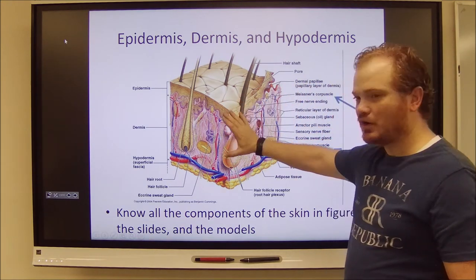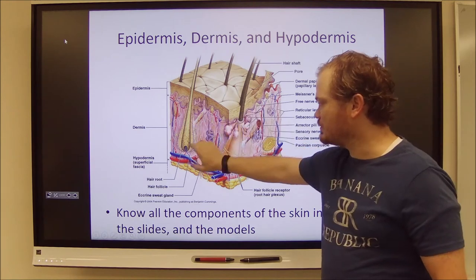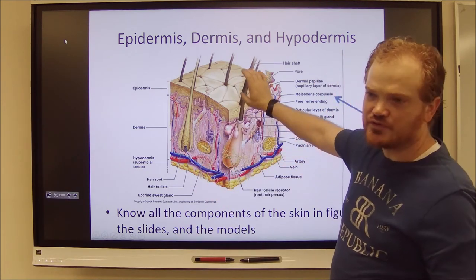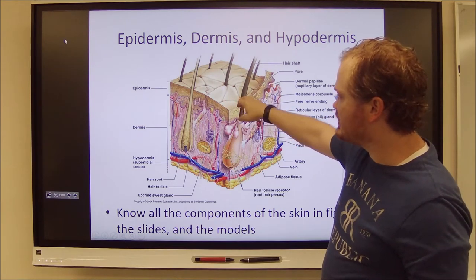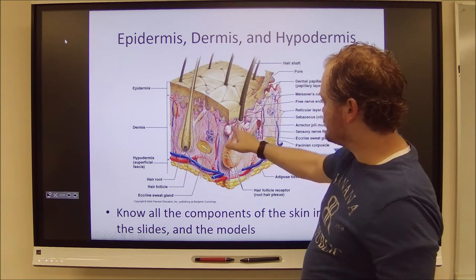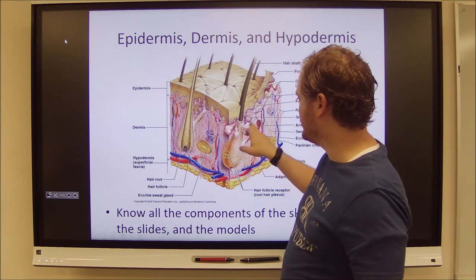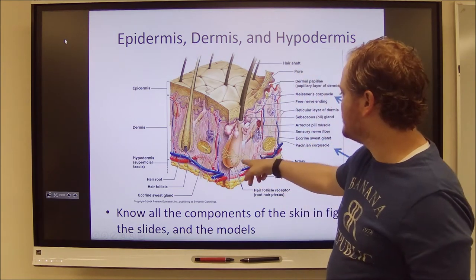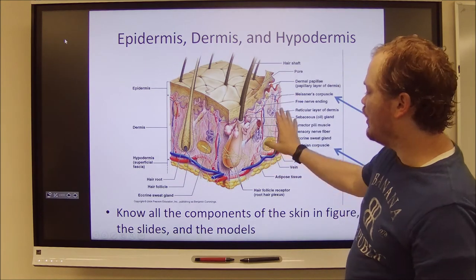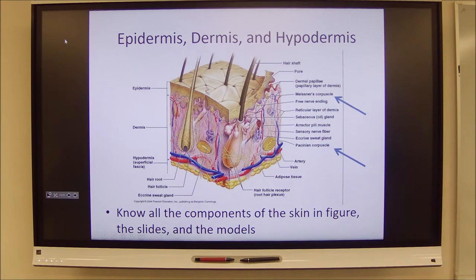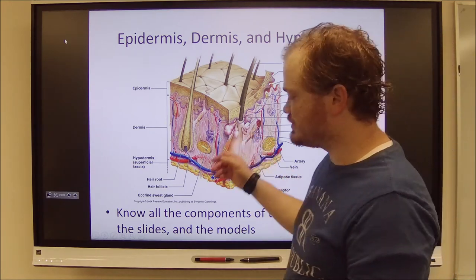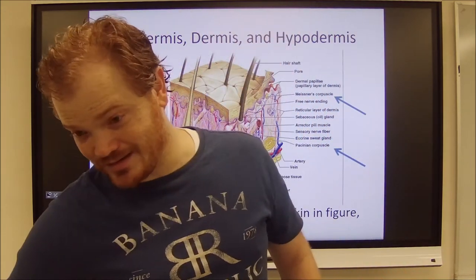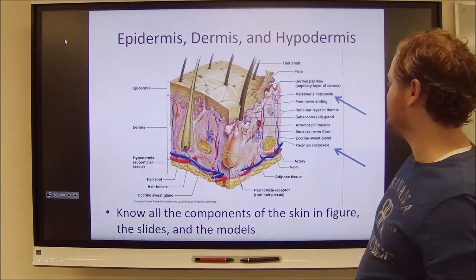The basic components are epidermis, dermis, and hypodermis. The epidermis is primarily stratified squamous epithelium with a flaky keratinized outer layer. We've got hair follicles, sebaceous glands, eccrine glands, erector pili muscles, and Pacinian and Meissner's corpuscles — all of it is here on this slide. You can expect me to use this model or an image like this on your test. I will point at something and ask you to identify it.